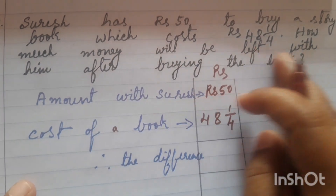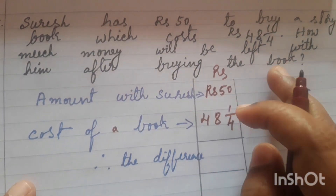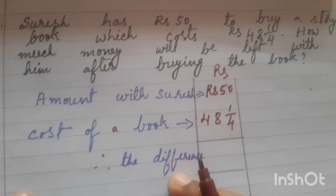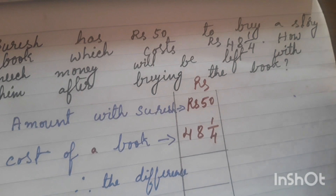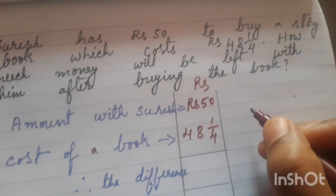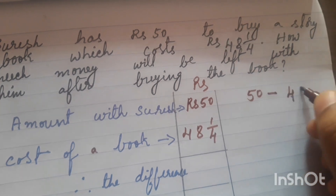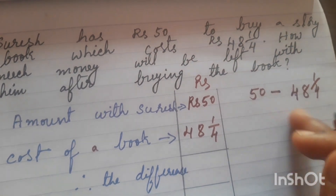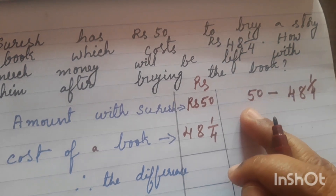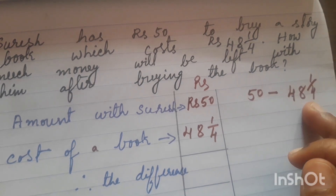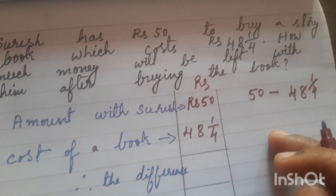So how much money will be left with Suresh after buying the book? The amount left with him is Rs. 50. In that Rs. 50, he spends Rs. 48 and 1 by 4. So left with means subtraction. How much total amount is left? So now we have to subtract.